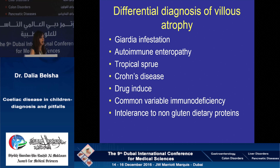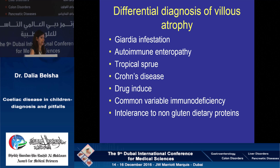Remember, the differential diagnosis for villus atrophy — especially when you have seronegative disease — includes other causes such as giardia infestation, autoimmune enteropathy, common variable immune deficiency, and other non-gluten dietary protein allergies.